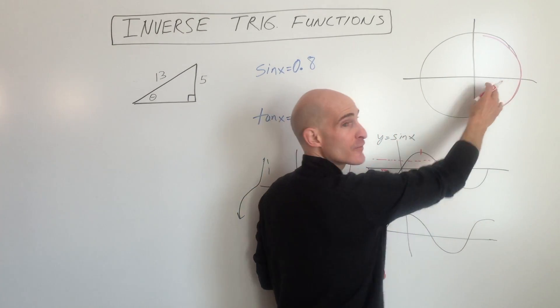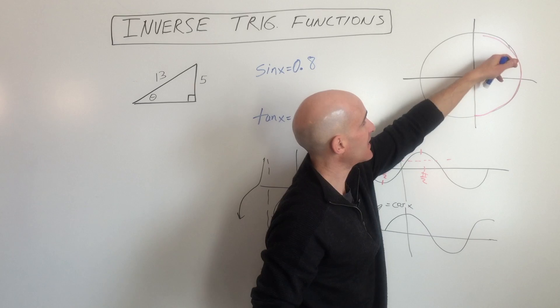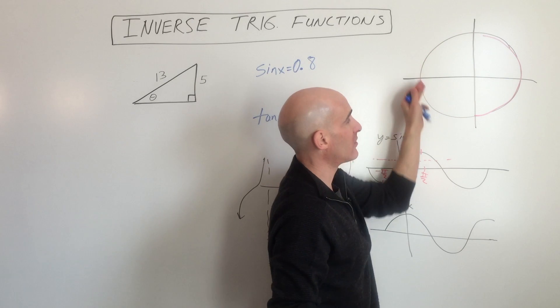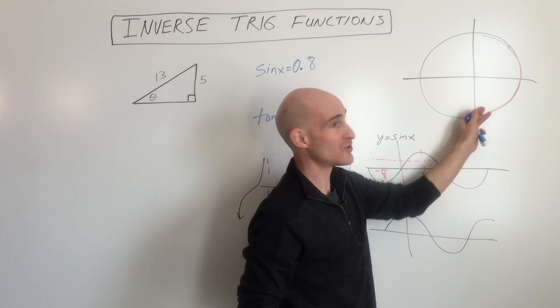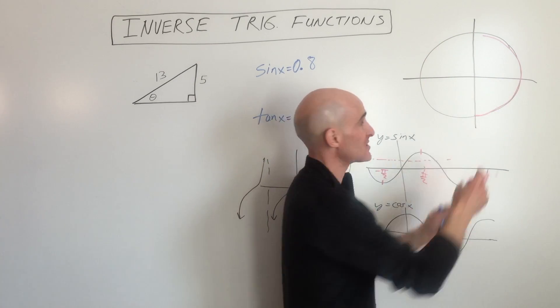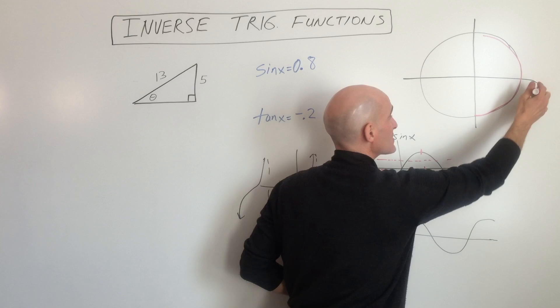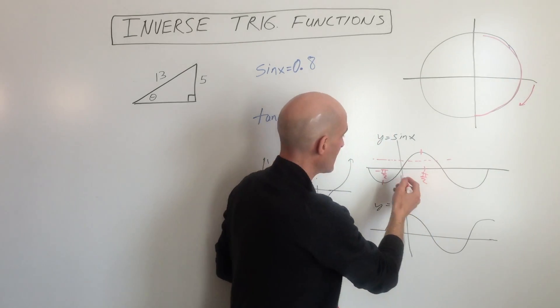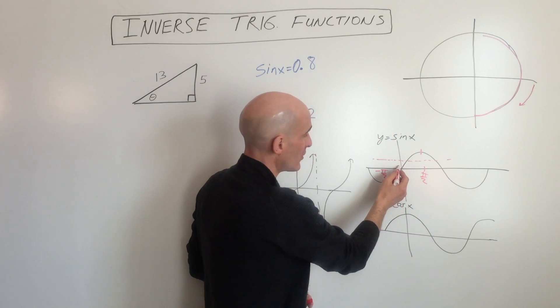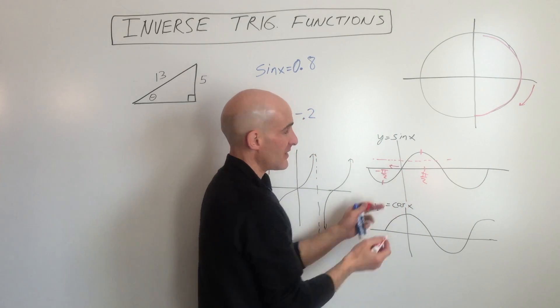If it ends up in the fourth quadrant, it's not going to give you an angle all the way around between 270 and 360. It's actually going to give it to you as a negative angle, because you're just going to the left — negative.